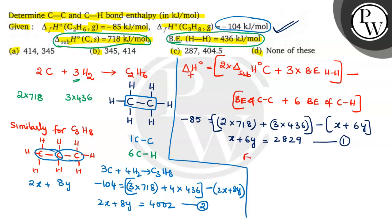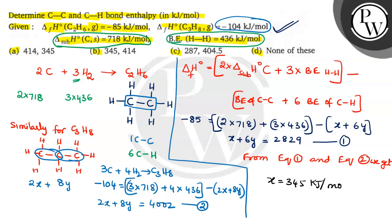From equation 1 and equation 2, we get X equals 345 kilojoules per mole. Option B is correct. Hope you understood. Good luck.